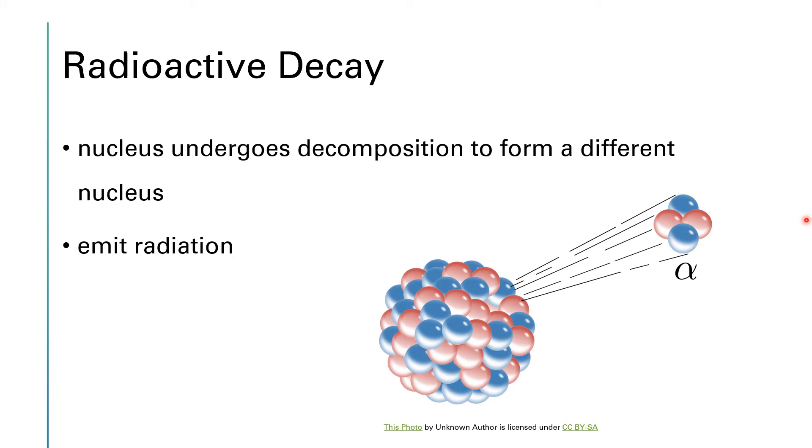Radioactive decay takes place when a nucleus undergoes a reaction to form a new nucleus. This is always accompanied by the emission of a lot of radiation. So in this particular example, this nucleus, which isn't really specified, is emitting an alpha particle. An alpha particle consists of two protons and two neutrons. It's the same as the nucleus of a helium atom.